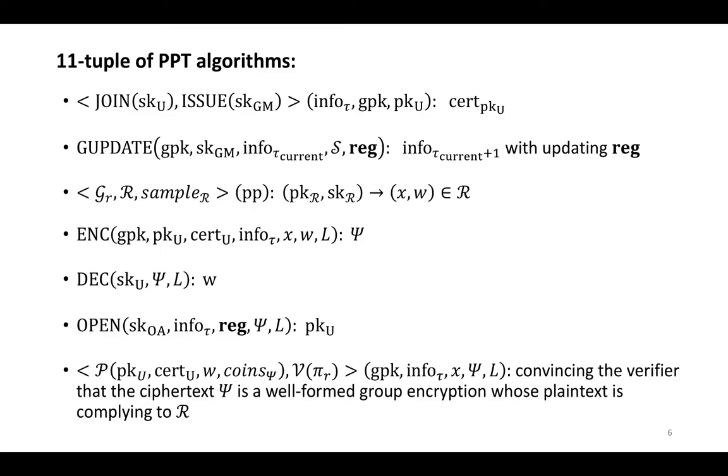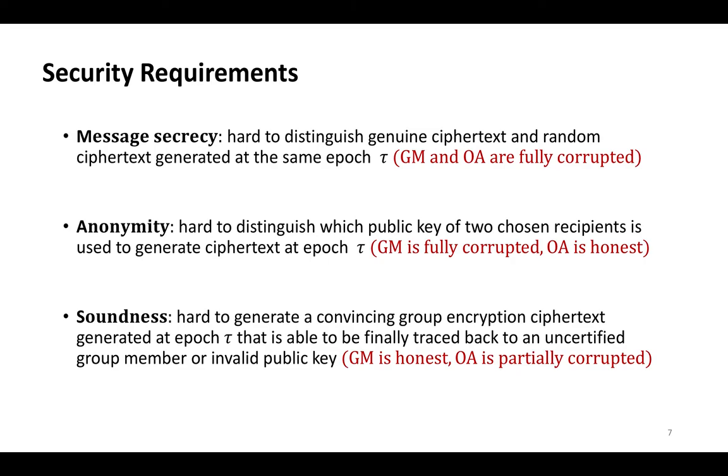For encryption, the sender runs this algorithm to sample a statement, which is a witness-statement pair complying to the relationship. Then the sender encrypts the witness under the user public key with the group information. Once the recipient receives the ciphertext, it runs this algorithm to recover the witness. Also, when a dispute occurs, the opening authority opens this ciphertext via this algorithm. Finally, the sender performs a zero-knowledge argument to convince the verifier that the ciphertext is a valid group encryption whose plaintext complies with the policy.